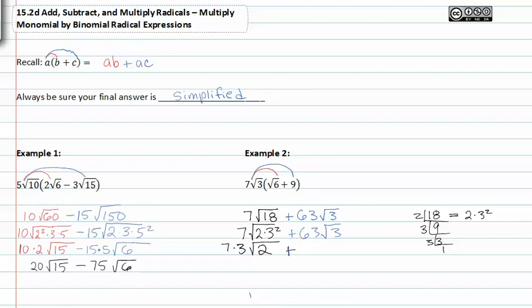Go ahead and rewrite the sixty-three root three. And I can simplify that just a little bit further by multiplying the seven times the three. Seven times three is twenty-one root two plus sixty-three root three.